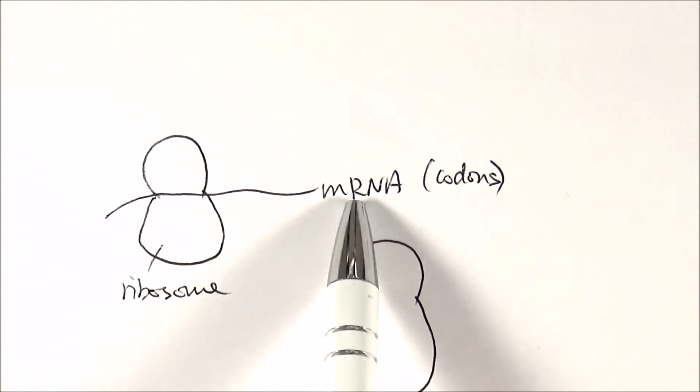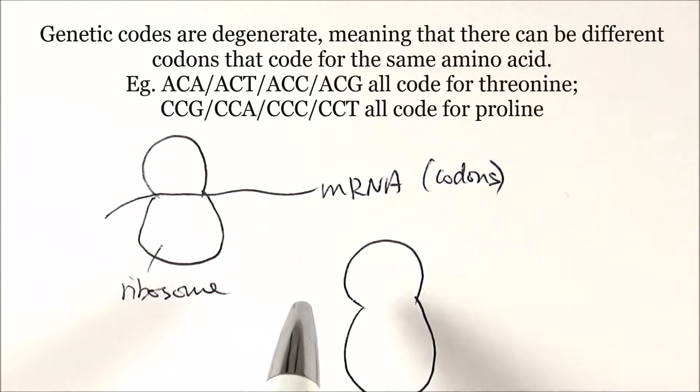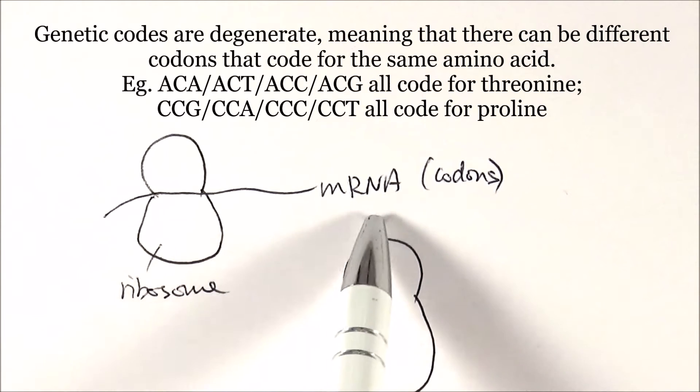For example, we can have ACG or AUG or CGG, whichever combination. Each of these combinations calls for a specific amino acid. But keep in mind they're degenerate, which means you can have slight changes to the codon that still call for the same amino acid.